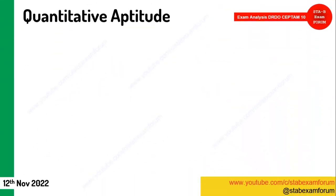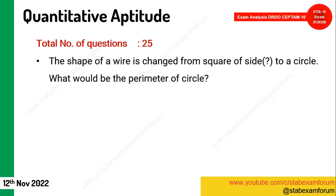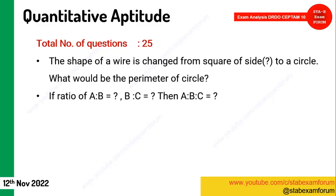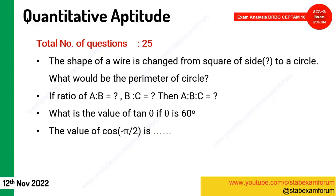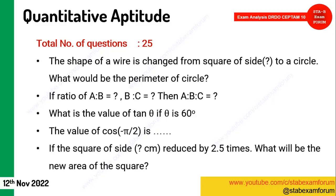Moving to Quantitative Aptitude — again 25 questions. Mensuration and trigonometry were in focus across all shifts, so review all related formulas. A question came like: 'The shape of a figure changes from square to circle — what would be the perimeter of the circle?' A question on ratio came where you had to merge ratios. Trigonometry value-based questions came, like 'tan θ when θ = 60°' — these are easy. Also 'cos(−π/2) — what will be the value?' From mensuration: a side of a square is increased or reduced by 2.5% — find the new area.